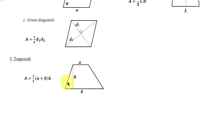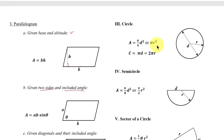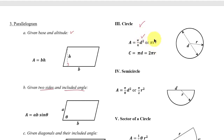For the trapezoid: Area = ½ × (a + b) × h, where a and b are the two parallel bases and h is the height. The variables are not fixed — you may use different labels as long as the concept is preserved. Number three is the circle: Area = (π/4) × d² in terms of diameter, or Area = π × r² using the radius. The circumference is C = π × d or 2πr. For a semicircle, the area is ½ of the full circle: Area = (π/8) × d² or (π/2) × r².